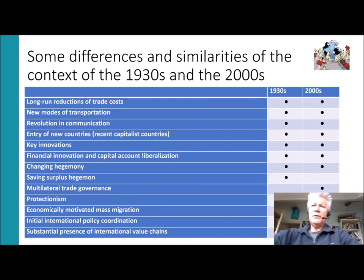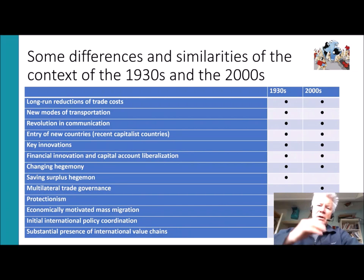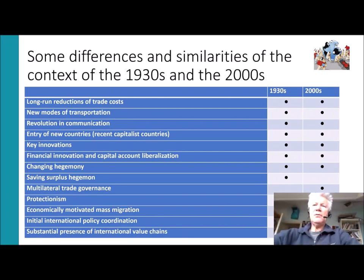There were other modes of transportation that became available, giving people much more mobility — a substantial increase in mobility in the 1930s as well as the 2000s.